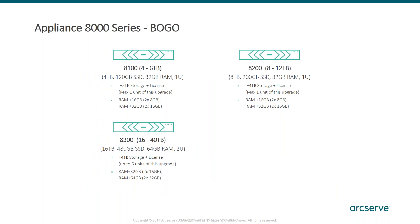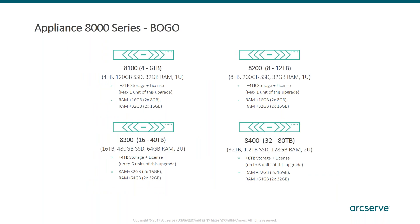We offer four levels of appliances, and within those appliances we offer different tiers and sizes. For instance, the 8100 is either a four-terabyte or six-terabyte box. When we go all the way to the 8400, it ranges from 32 terabytes up to 80 terabytes in roughly 4-to-8-terabyte upgrades — so it goes from 32 to 40 to 48 and so forth. We also have field expansion units where you can add additional storage. If you're interested in further information on that, just let us know.